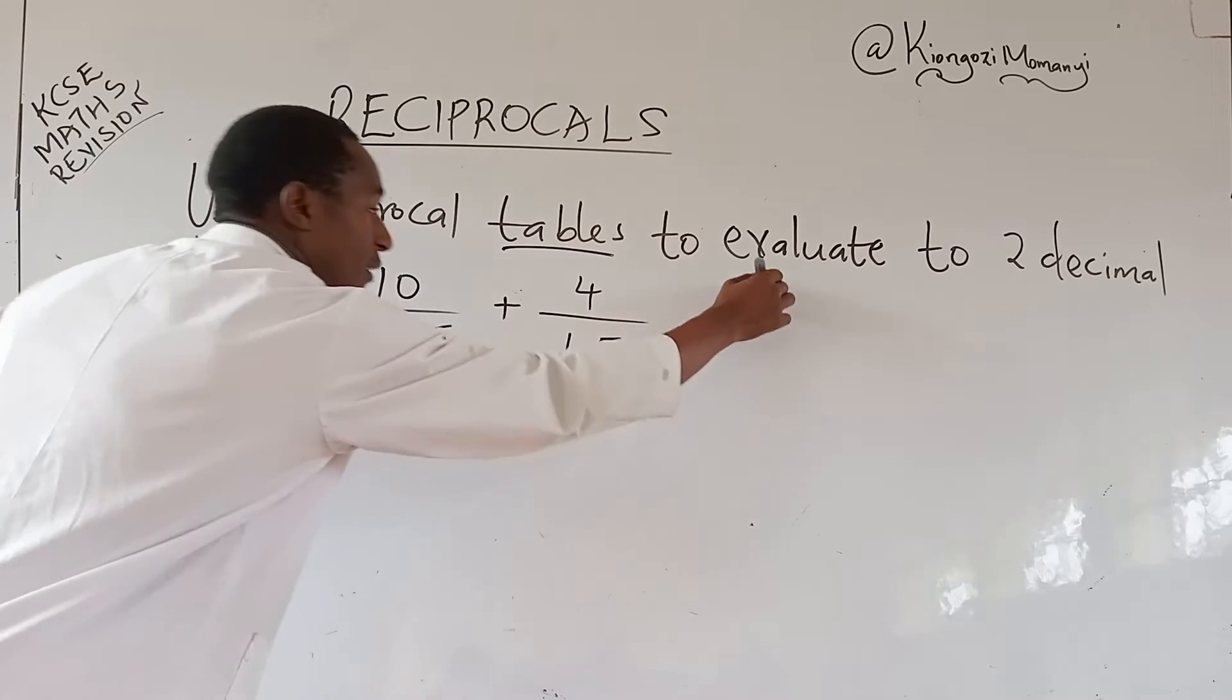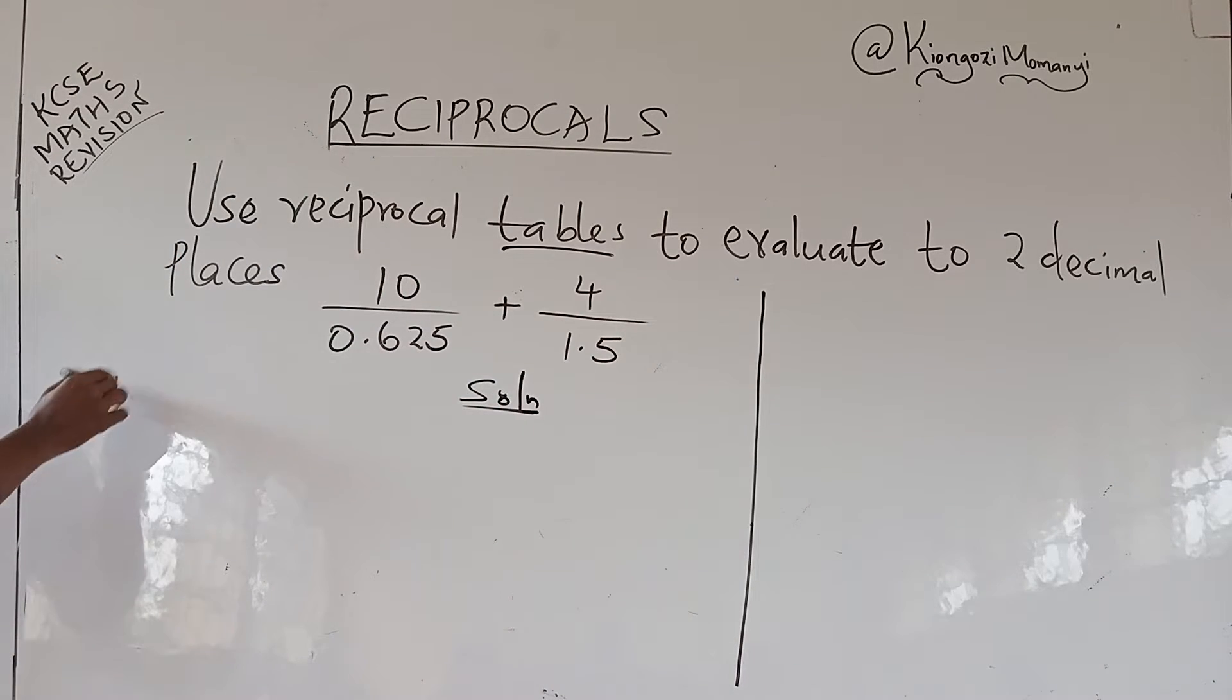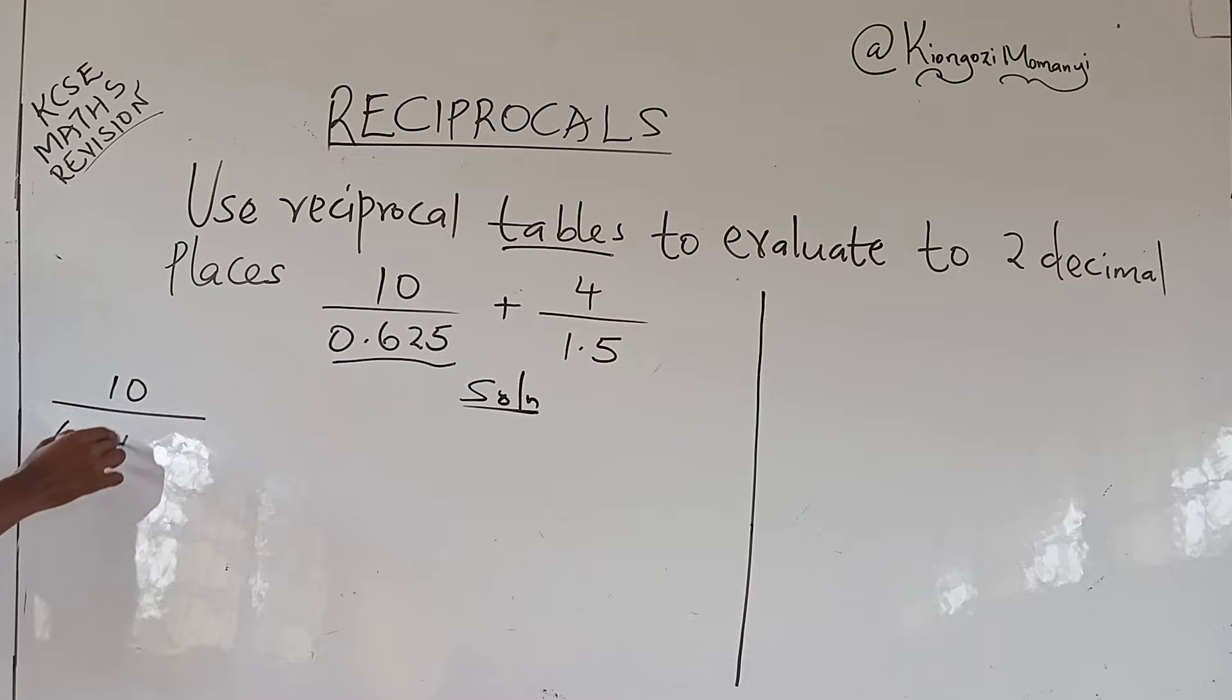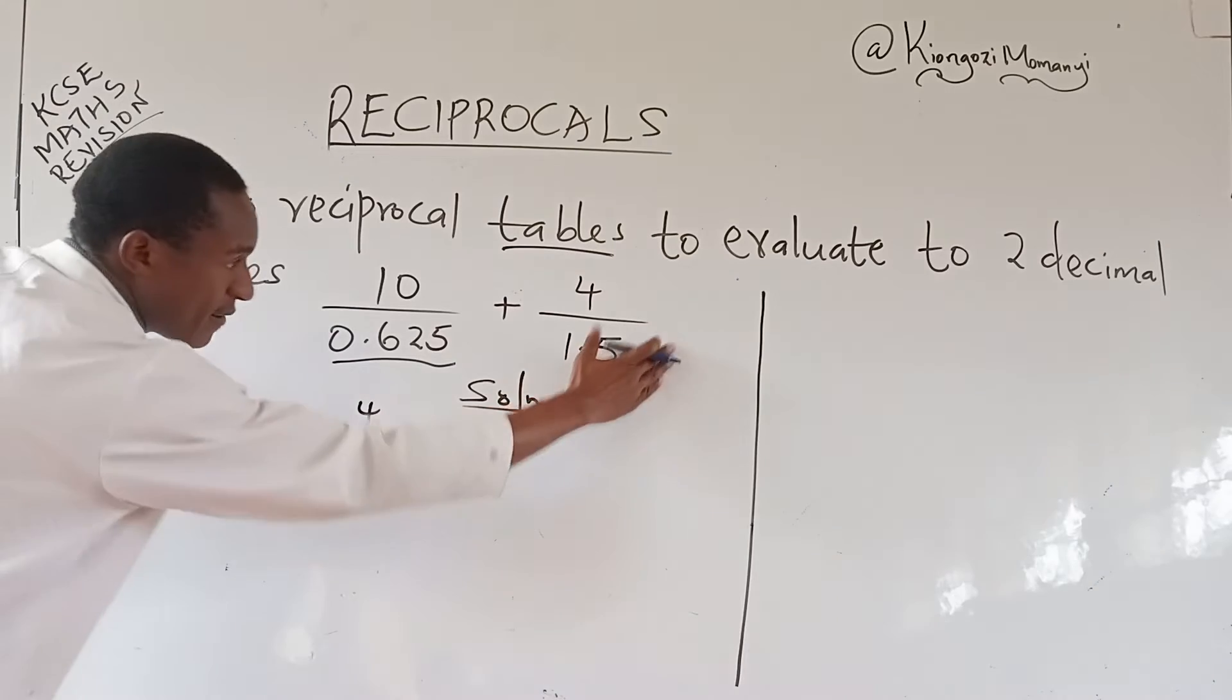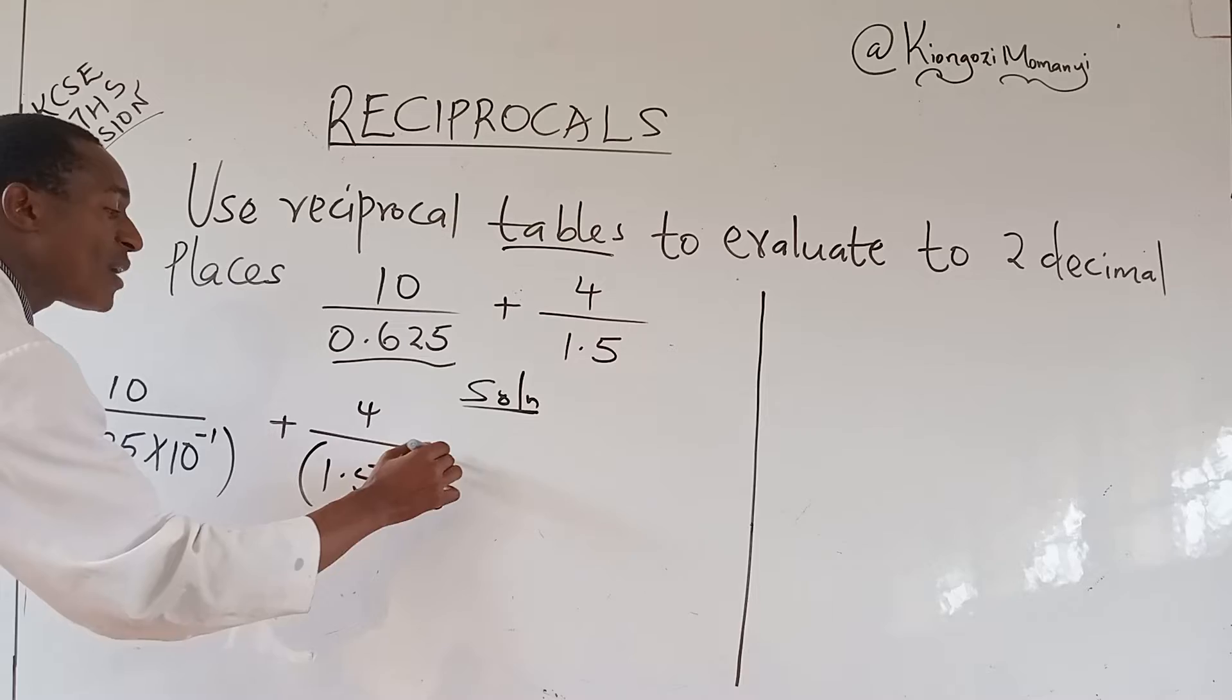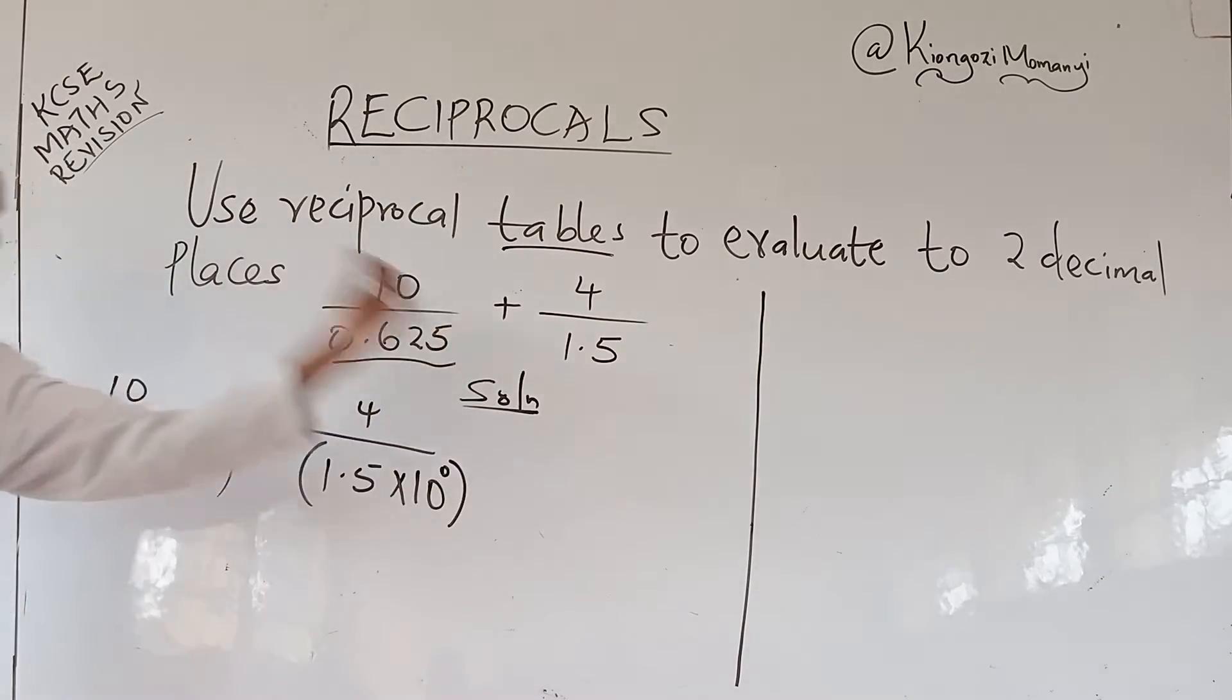we write the standard forms of the denominator first. So we shall have 10 over, the standard form of 0.625 is 6.25 times 10 power negative 1. Then plus 4 over, the standard form of 1.5 is 1.5 times 10 power 0.